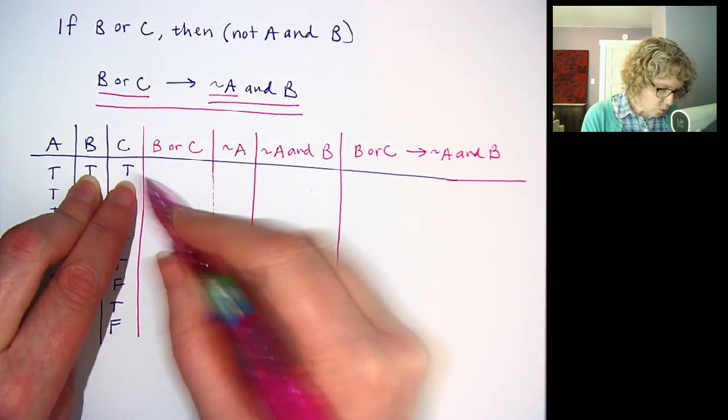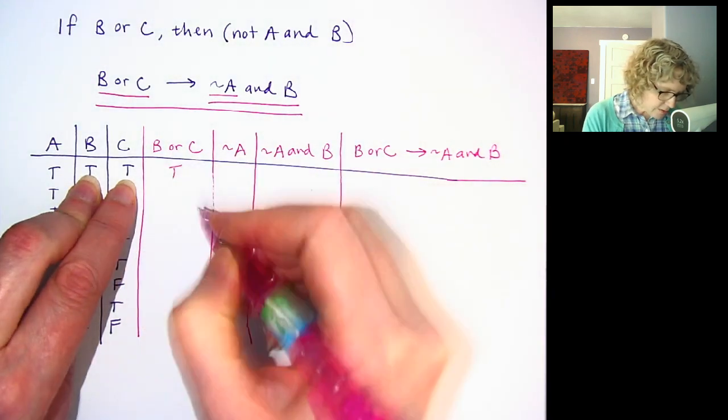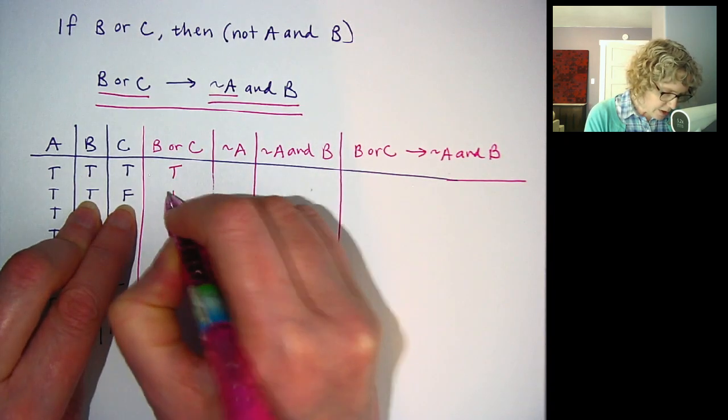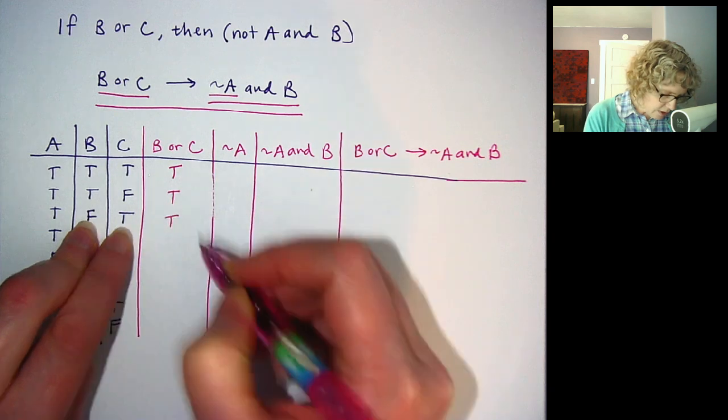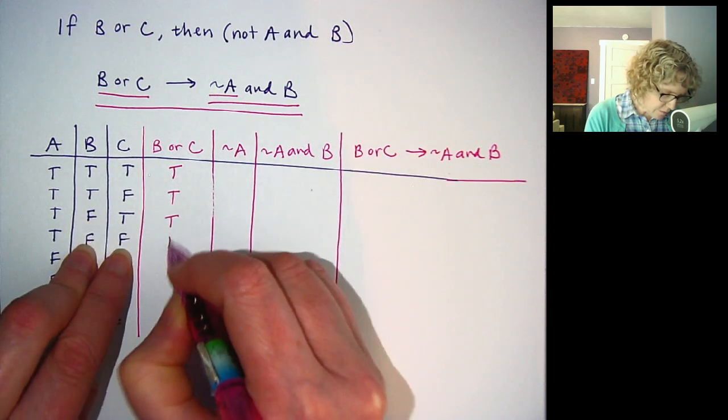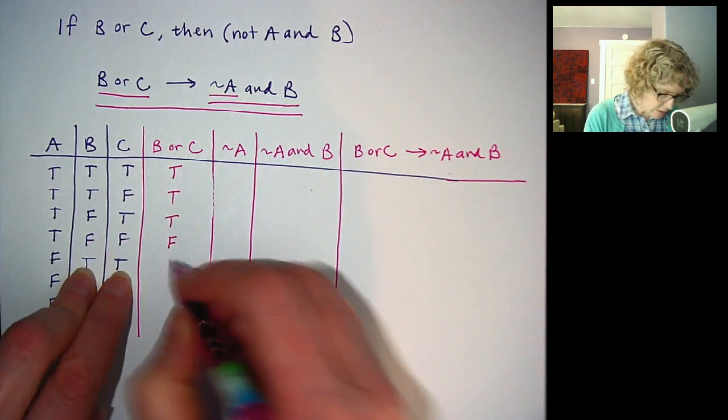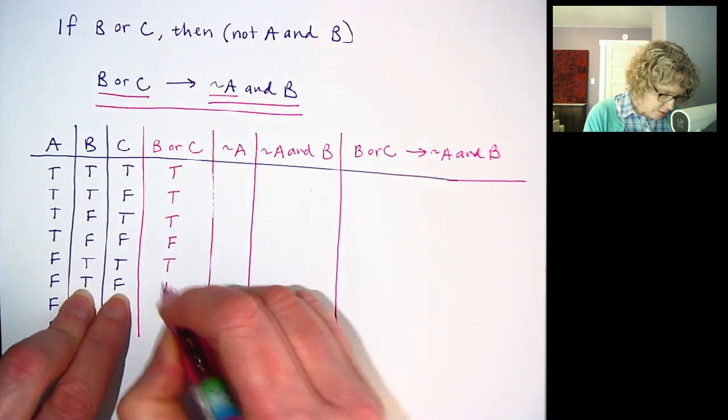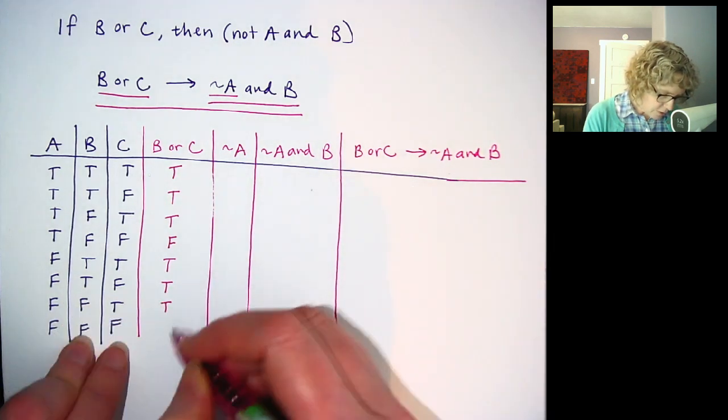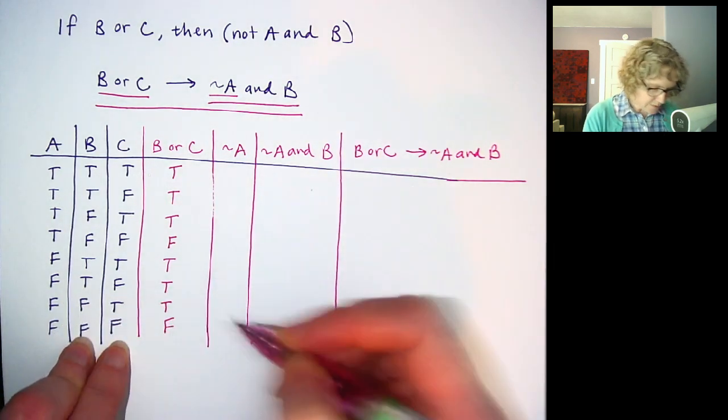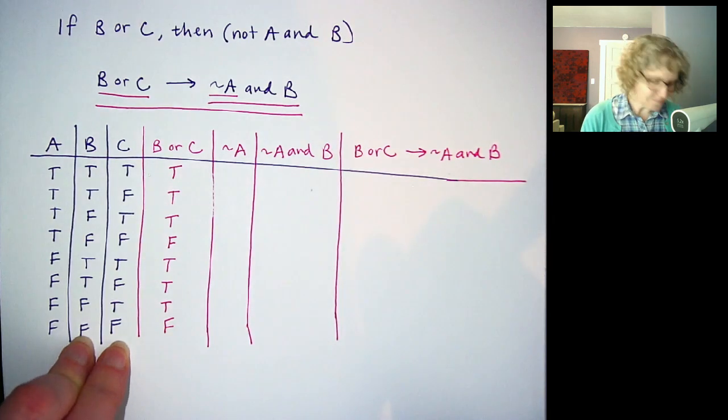So B or C, one or the other has to be true. One or the other, one or the other. Okay, those are both false. So the or is false. One or the other, one or the other, and both false. You've got a nice little pattern there. Okay, that's the or.